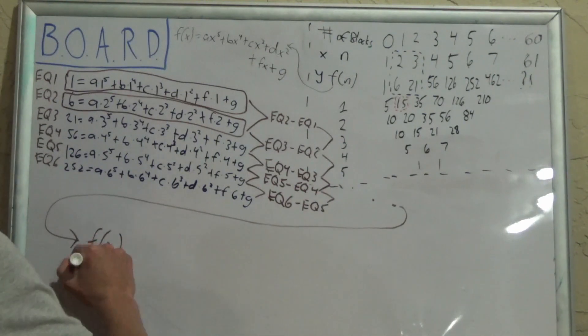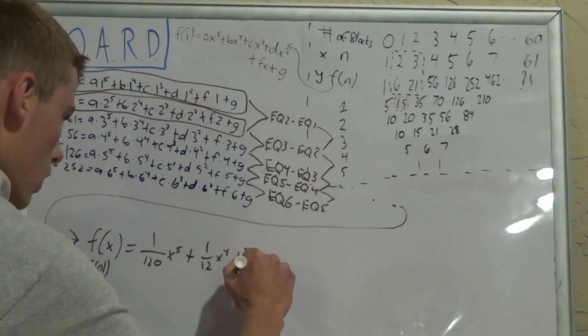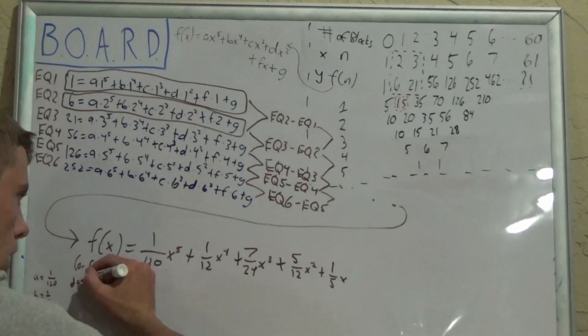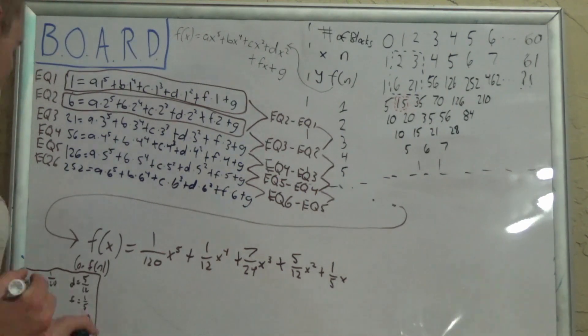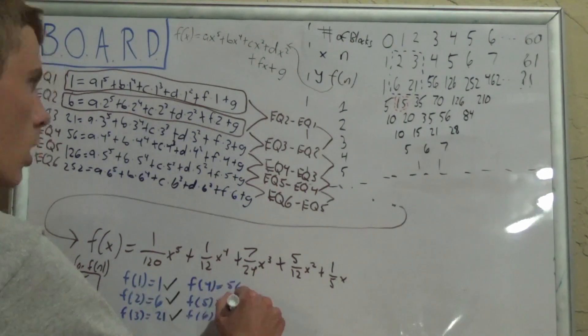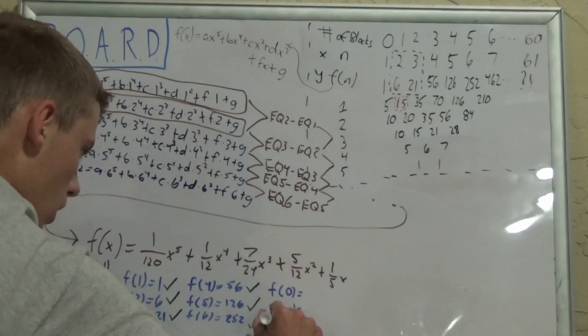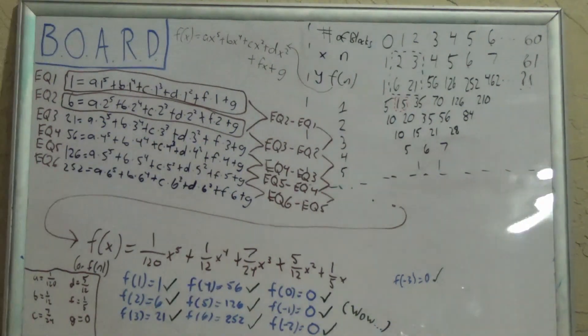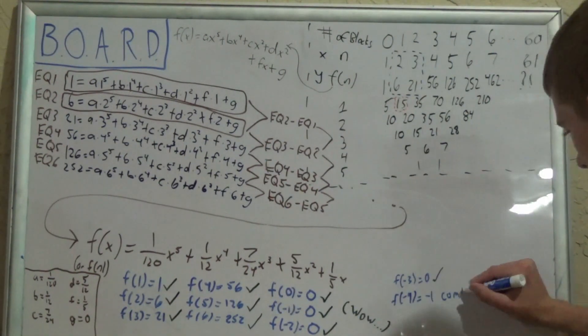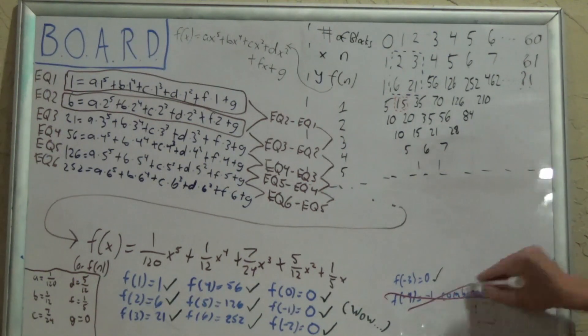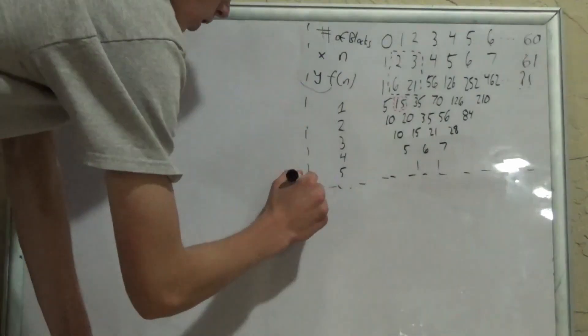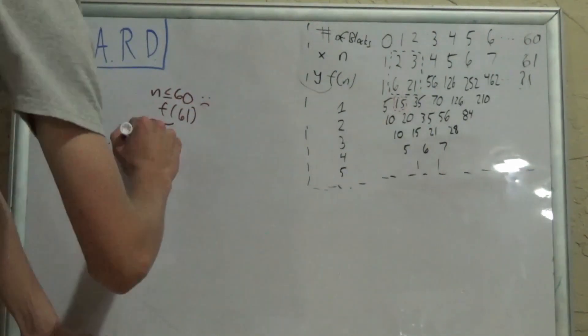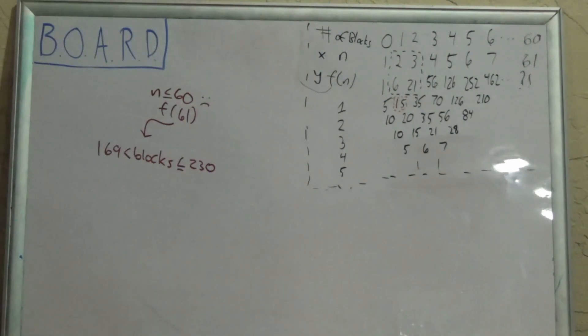Now, we know that f of n follows the pattern f of x equals ax to the fifth plus bx to the fourth plus cx cubed plus dx squared plus fx plus g. We can plug in values for x and f of x to get six different equations, and when we subtract the second one from the first, third from second, etc., and repeat this, we can solve for a, then b, then c, and then the rest of the variables. Now, we can plug those values into the original equation to get f of x equals 1/120th x to the fifth plus 1/12th x to the fourth plus 7/24ths x cubed plus 5/12ths x squared plus 1/5th x. I plugged in all the values we already knew and got the right answers, so our function is correct. Also, if we take away 0 through negative 3 blocks, there are 0 combinations, which is correct and legitimately impressive. It kind of falls apart when we take away negative 4 blocks with negative 1 combinations.